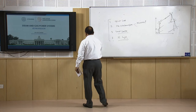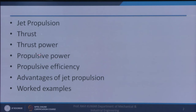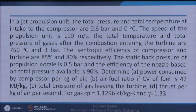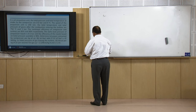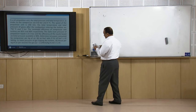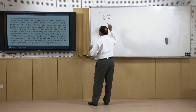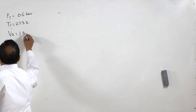Now we will solve a numerical example on jet propulsion. In a jet propulsion unit, the total pressure and total temperature at intake to the compressor are 0.6 bar and 0°C respectively. So P_1 = 0.6 bar and T_1 = 273 K. The speed of the propulsion unit is V_A = 190 m/s.